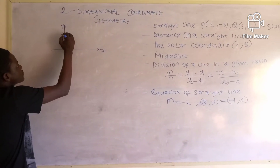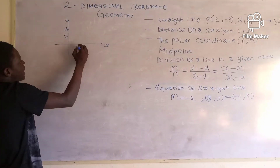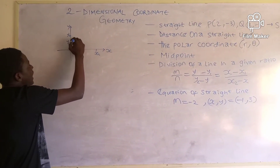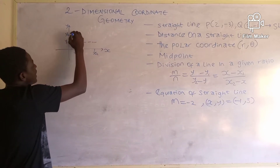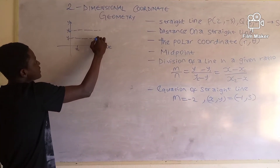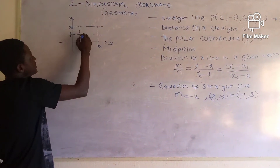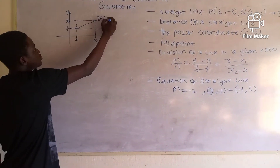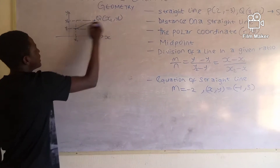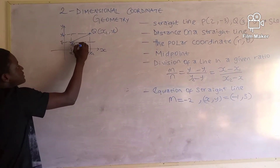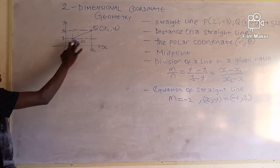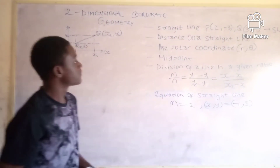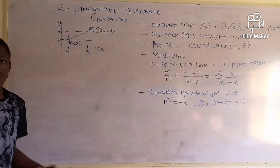We have a point y2 and a point y1 here, and a point x1 and a point x2 here. The lines intersect, and the distance from one point to another: we name this point Q as (x2, y2) and point P as (x1, y1), since P lies on the x1 and y1 lines, and Q lies on x2 and y2.